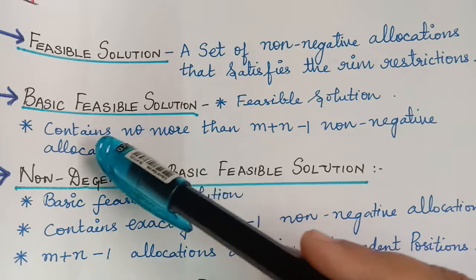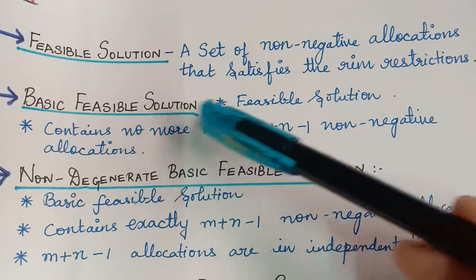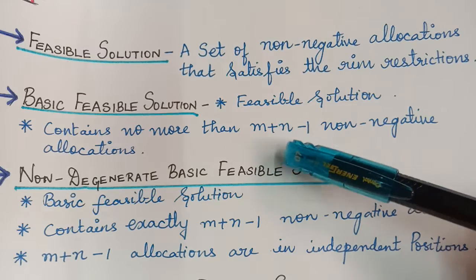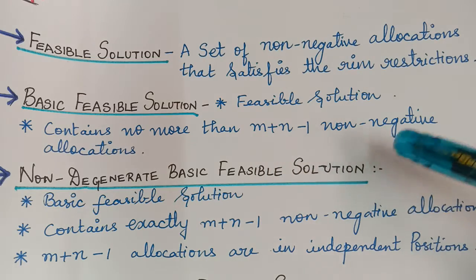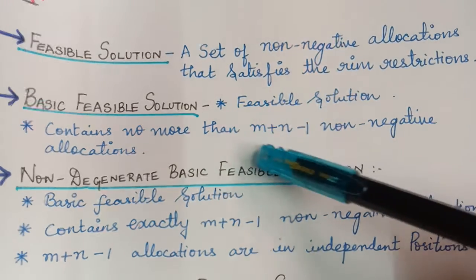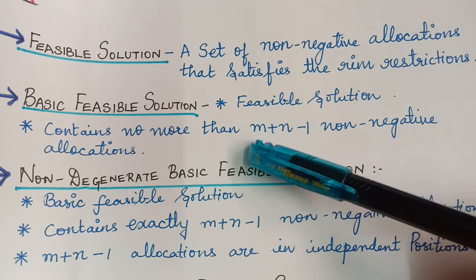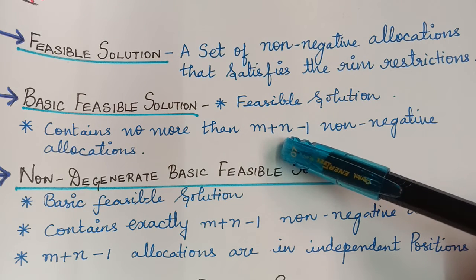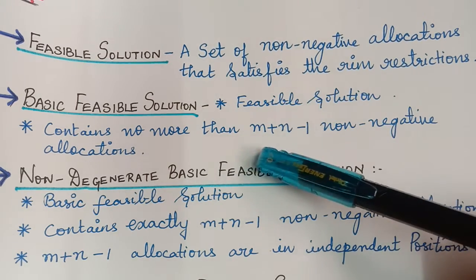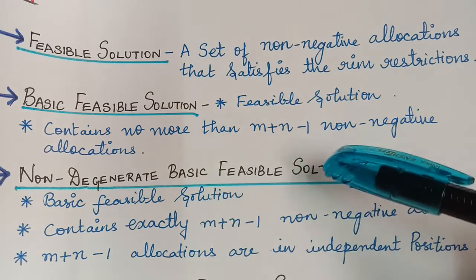A basic feasible solution must first be a feasible solution, and it contains no more than M plus N minus 1 non-negative allocations. M represents the number of rows and N represents the number of columns, and the allocations will not be more than M plus N minus 1.